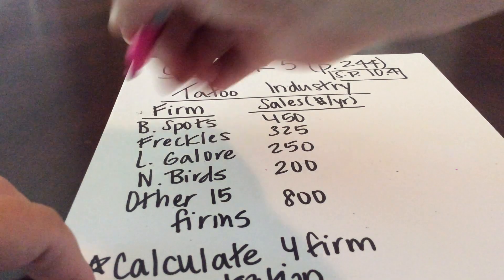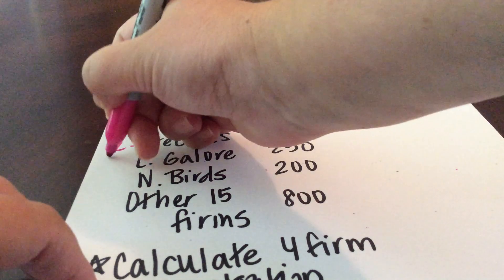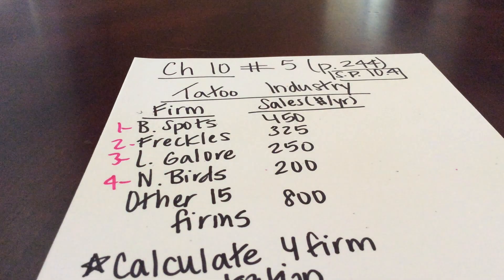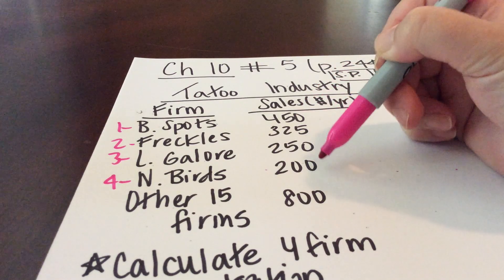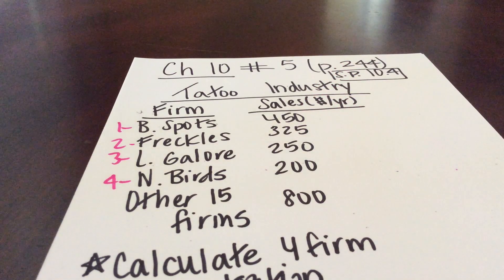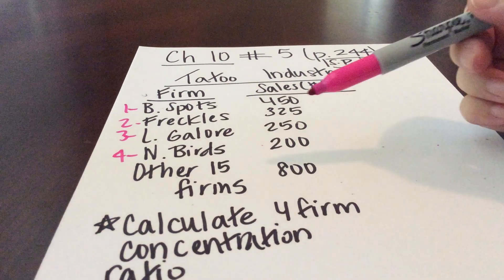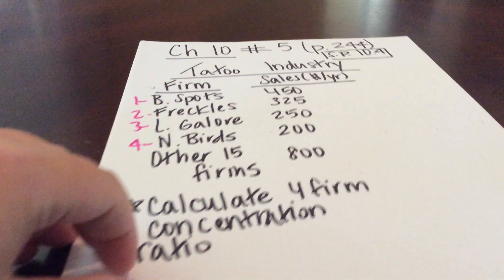We have our top four firms, and their annual sales are $450, $325, $250, and $200 per year. The other 15 firms that make up the tattoo industry have total sales equaling $800 per year.